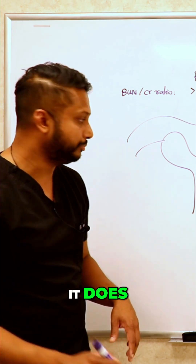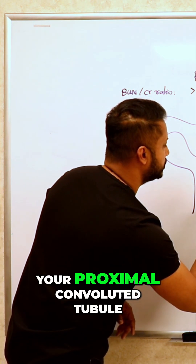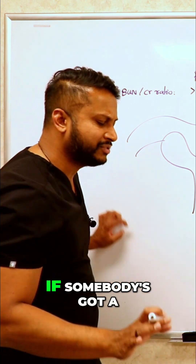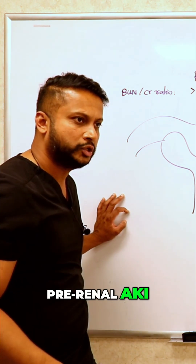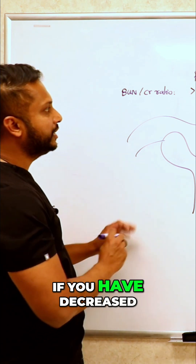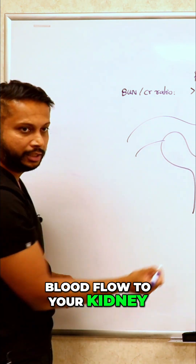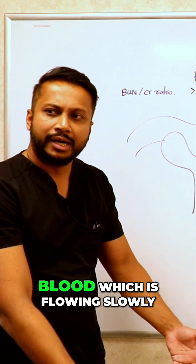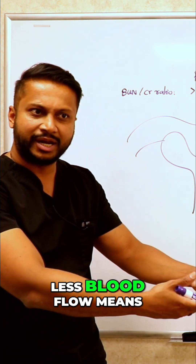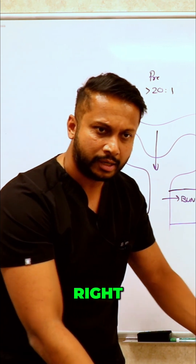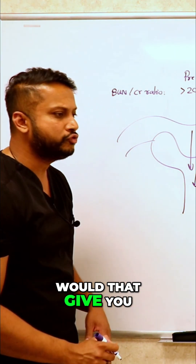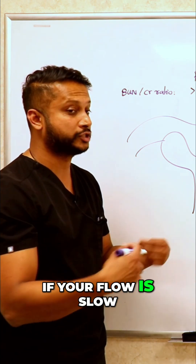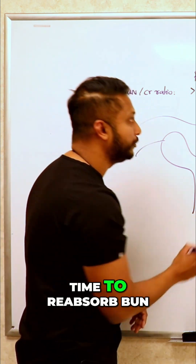Yes, it does. BUN gets reabsorbed in your proximal convoluted tubule. So think about this: if somebody's got a pre-renal AKI, you have decreased blood flow to your kidney. If you have decreased blood flow, you will have less blood which is flowing slowly. Less blood flow means slow flow — and if you have slow flow, would that give you more time to reabsorb BUN? Yes. If your flow is slow, you will have more time to reabsorb BUN.